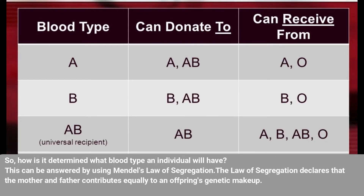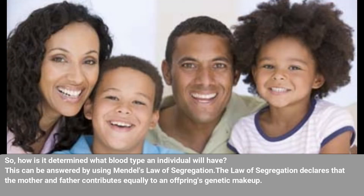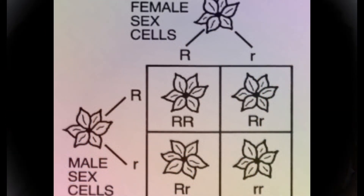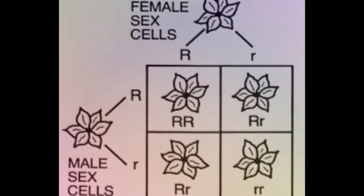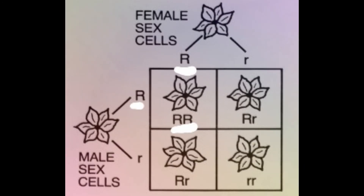This can be answered by using Mendel's law of segregation. The law of segregation declares that the mother and father contribute equally to an offspring's genetic makeup. This means that a person with blood type AB will pass on either an A or B allele to a child, but not both — the other allele will come from the other parent. Also, with the Punnett square, we can visually see how each parent contributes one of their alleles and all of the possible options for the creation of their offspring's new gene.